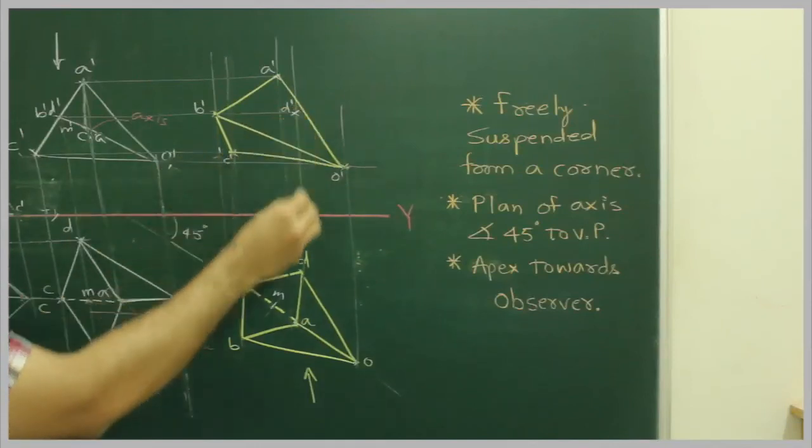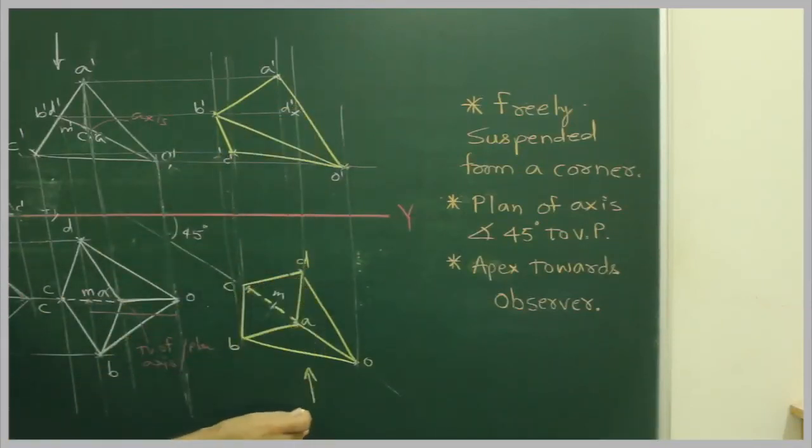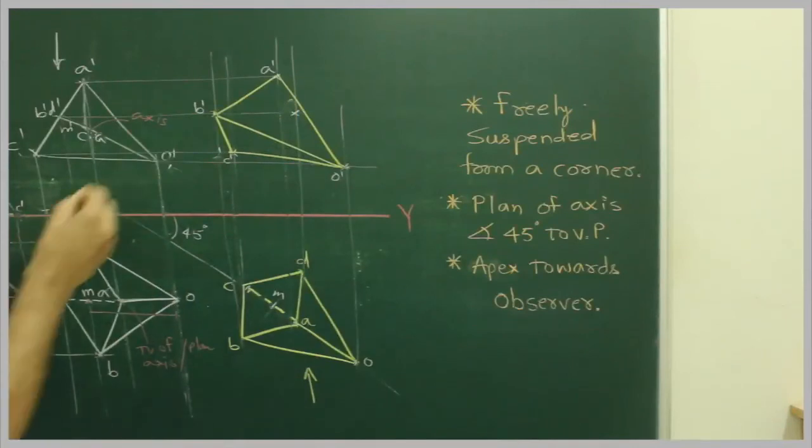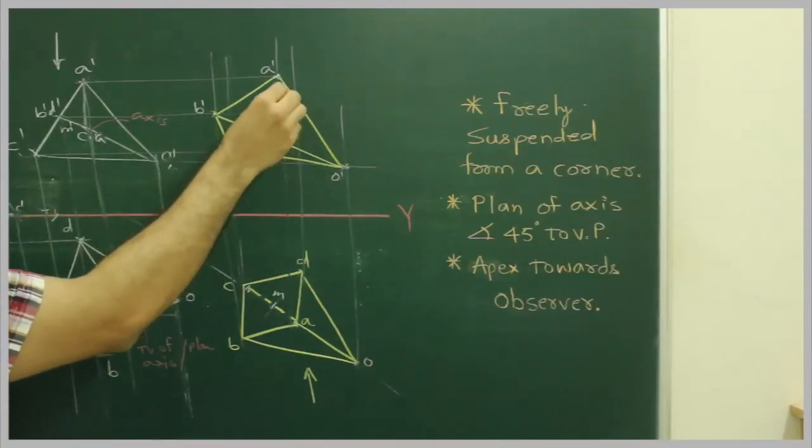Now point D, point D is away from observer. So this is D dash.